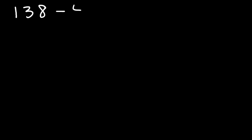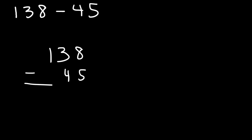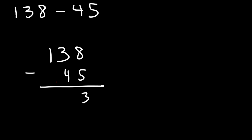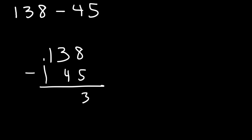Here's another example: 138 minus 45. Go ahead and work on that one. Let's line up the numbers. First, let's subtract 8 by 5: 8 minus 5 is 3, so we don't have an issue there. And then here we have 3 minus 4, which is negative 1, so we do have an issue. Since this is the last number, we could just do 13 minus 4. And so in this case, the answer is 93.